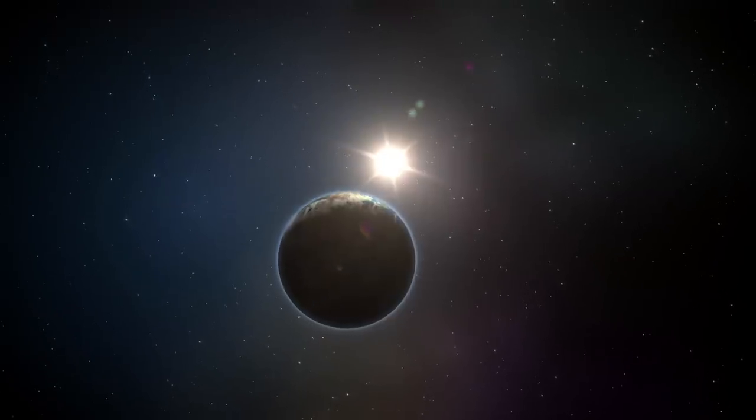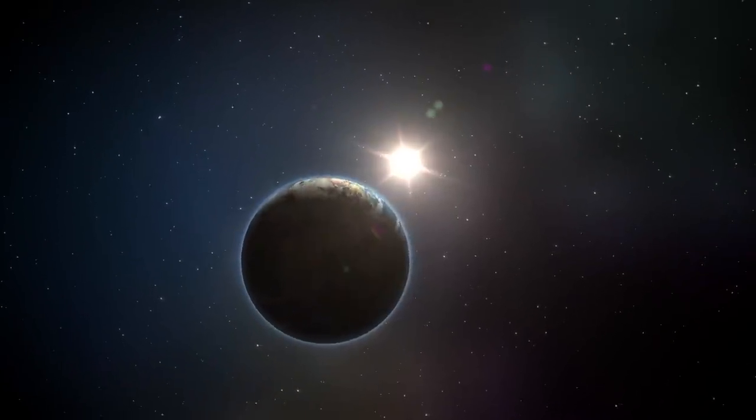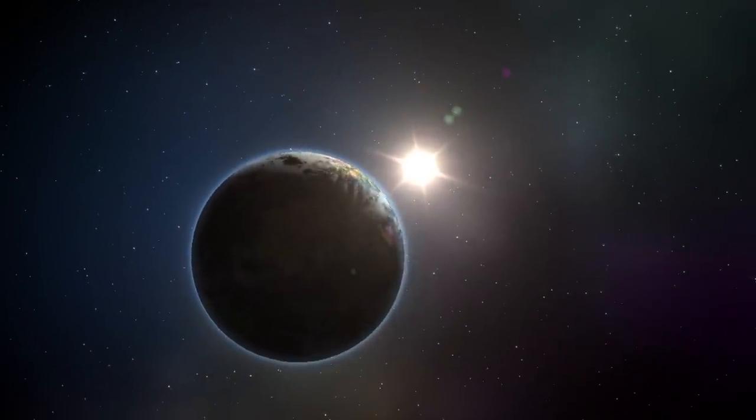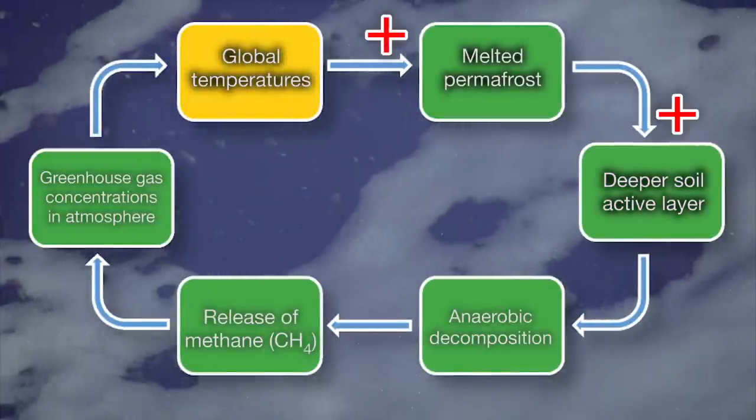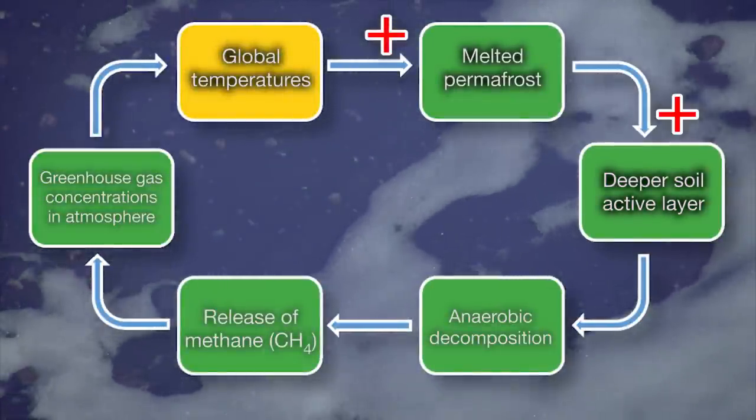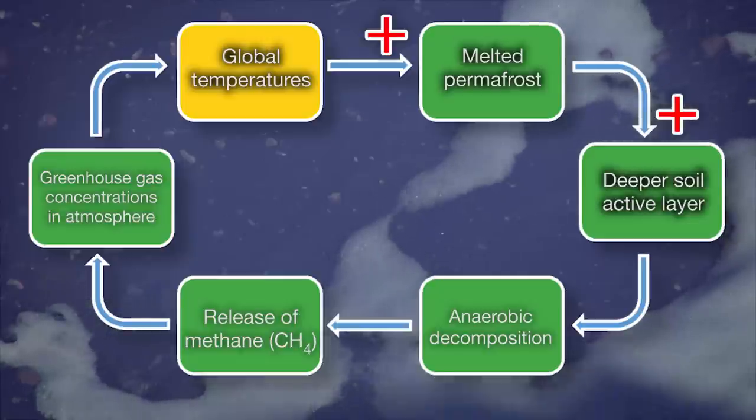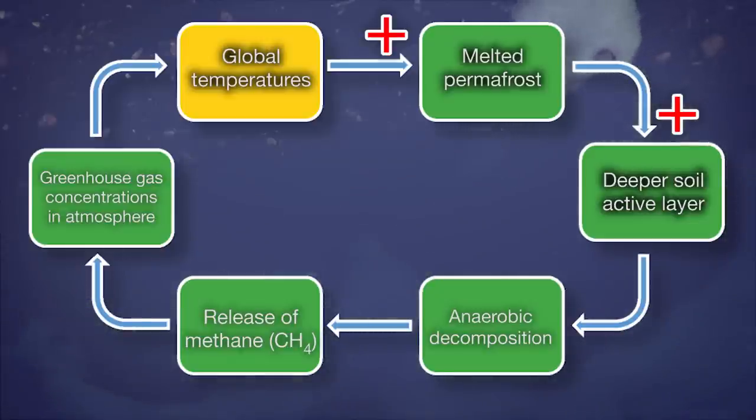Here's another polar feedback cycle. For whatever reason, there are warmer global temperatures. Warmer temperatures melt the permafrost, Arctic tundra soils, and deepen the active thawed layer in the Arctic. The fact that the soil is thawed for more of the year, for more months of the year, means that dead organic matter is available for decomposition for more of the year.